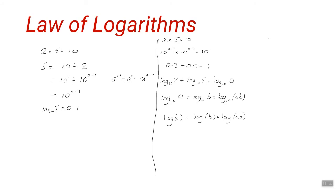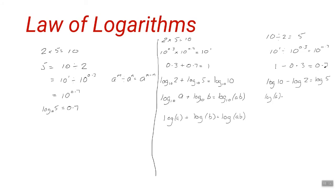We could have worked this out as a division calculation just as easily: 10 ÷ 2 = 5, so 10^1 ÷ 10^0.3 = 10^0.7, using the law of exponents that 1 − 0.3 = 0.7. In log form: log base 10 of 10 minus log base 10 of 2 equals log base 10 of 5. Generalising, log A − log B = log(A/B). This works in any base as long as the base is consistent — that is the quotient rule of logarithms.